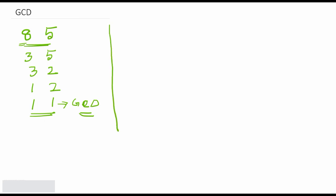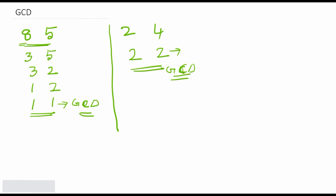Let us see one more example: two and four. Are they equal? No. The bigger is four: four minus two is two. Are both two? Yes — two is the GCD. GCD stands for greatest common divisor.